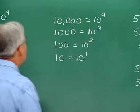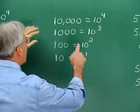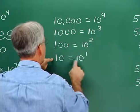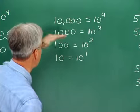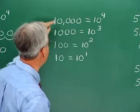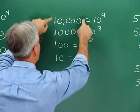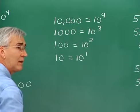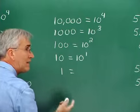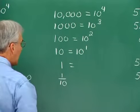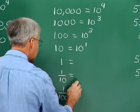Take a look at this pattern. We know that 10,000 is ten to the fourth power, 1,000 is ten cubed, 100 is ten squared, and 10 is ten to the first power. Look at how numbers on the left side are generated: if I take 10,000 and divide by ten, I get 1,000. Divide 1,000 by ten, I get 100. Divide by ten, I get 10. If I take 10 and divide by ten, I get 1. And then 1 divided by ten gives one tenth. One tenth divided by ten gives one over 100.